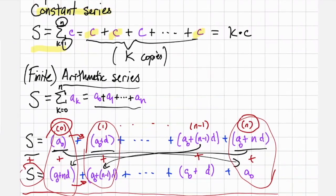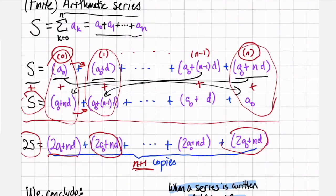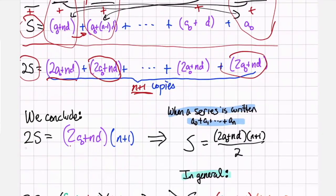Hey look, that's a constant series. And so we conclude that two times the sum that we care about is 2a0 plus nd times n plus 1.